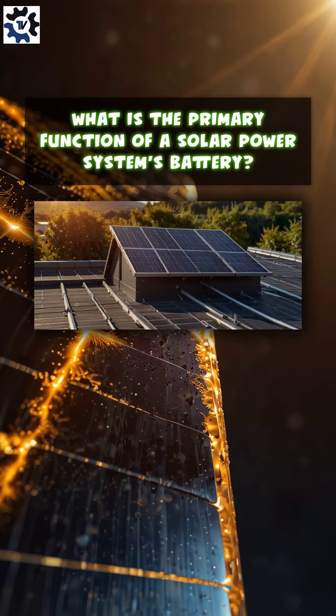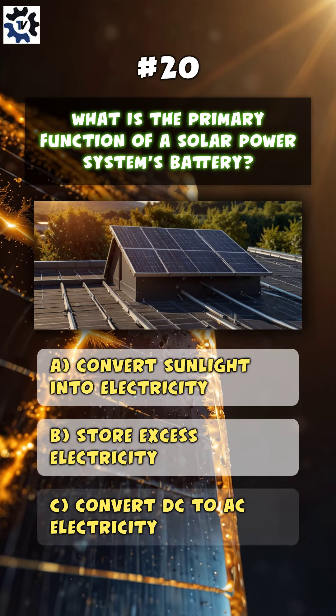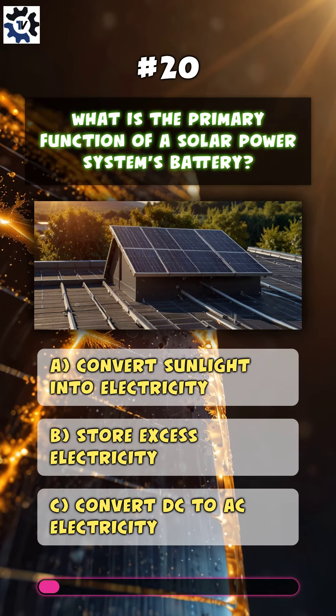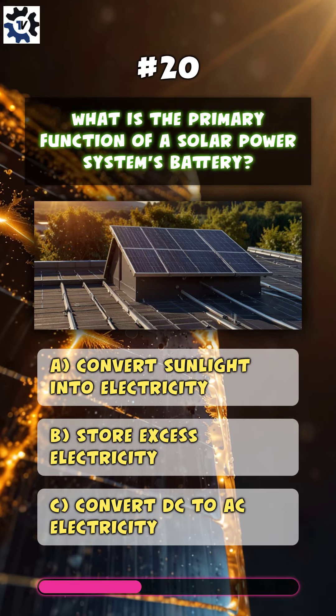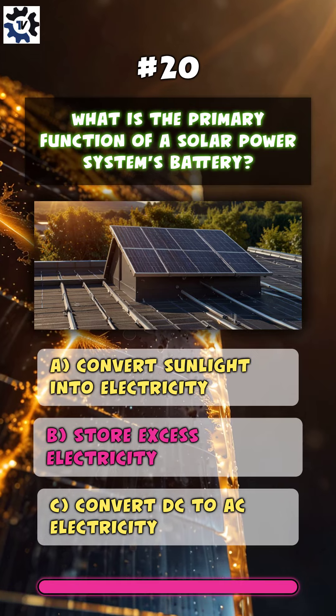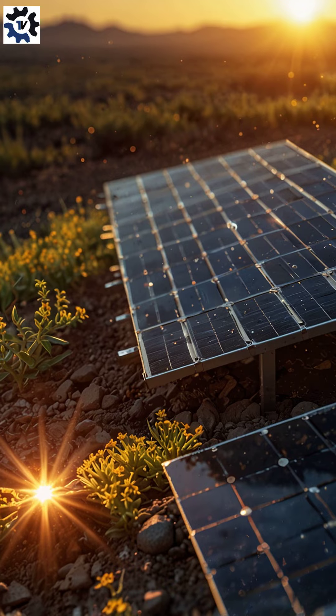What is the primary function of a solar power system's battery? B. Store excess electricity.